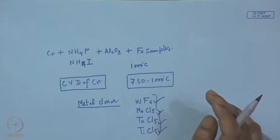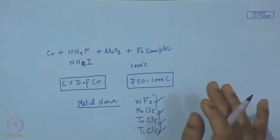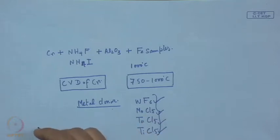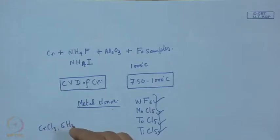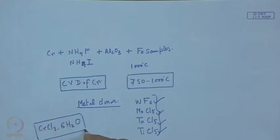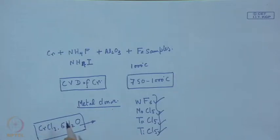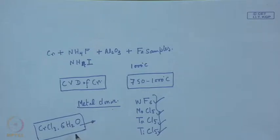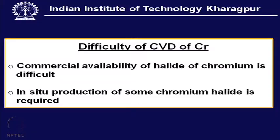However, in case of chromium, this does not happen. What is commercially available is CrCl2·6H2O. This material needs complete drying, and it has to be fed in a metered quantity through the reactor near the substrate surface to have close control on the growth and deposition rate. So unless one has a sophisticated system for doing this, it will not be a very interesting way of conducting CVD of chromium using this commercial product.